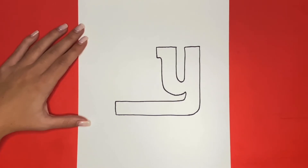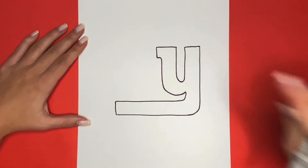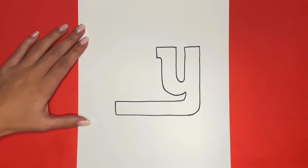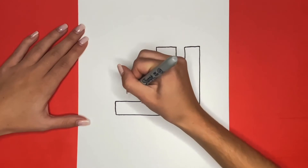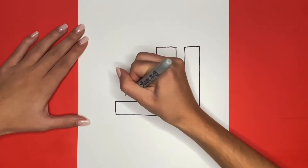Now we just have to draw the N, which will be right above here. We will start by drawing a tall, skinny, upside-down U-like shape. This will be the middle of our N.